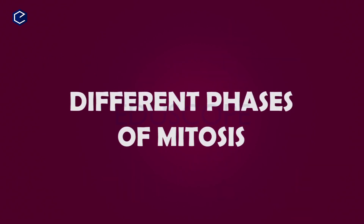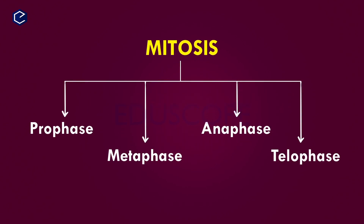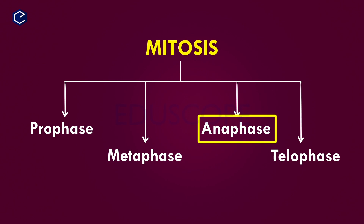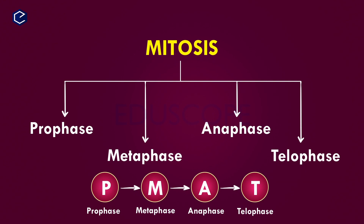Mitosis goes through different phases. It has four phases: prophase, metaphase, anaphase, and telophase. Simply put, these four phases are called PMAT.